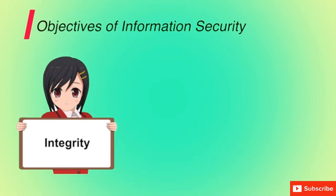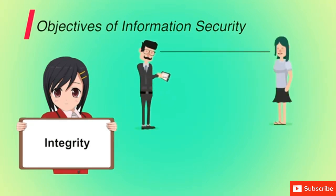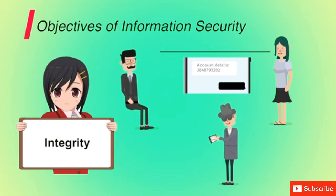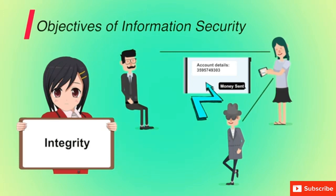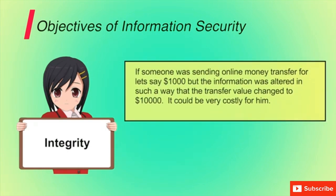The second objective is integrity. It involves protection against improper information modification or destruction. A loss of integrity is the unauthorized modification or destruction of information. For example, suppose you are sending your account number to your friend to transfer money. If an attacker modifies the account number and places his own, then the integrity of the message breaks. Also, if an online money transfer for $1,000 was altered to $10,000, it could be very costly.